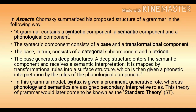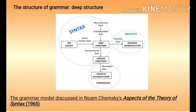In Aspects, Chomsky summarized his proposed structure of a grammar in the following way: a grammar contains a syntactic component, a semantic component, and a phonological component. The syntactic component consists of a base and a transformational component. The base in turn consists of a categorical subcomponent and a lexicon. The base generates deep structures. A deep structure enters the semantic component and receives a semantic interpretation.